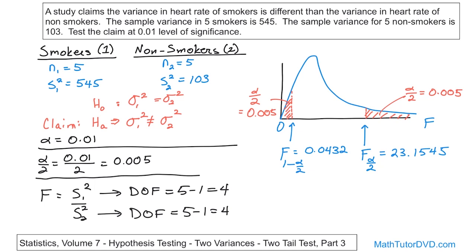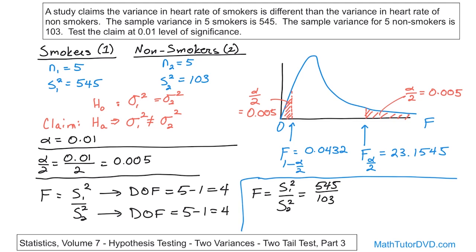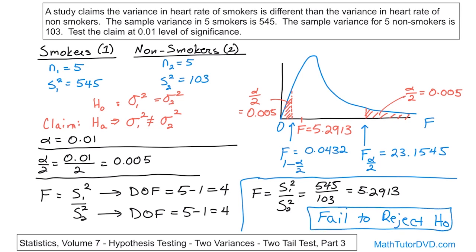Now we calculate the test statistic. F equals S one squared over S two squared, which is 545 over 103, and when you divide those you get 5.2913. Where does this fall? If 0.0432 is way to the left and 23.1545 is way to the right, then 5.29 is somewhere in the middle — it is not in the rejection region. So we write down that F equals 5.2913, which is in the fail-to-reject region.